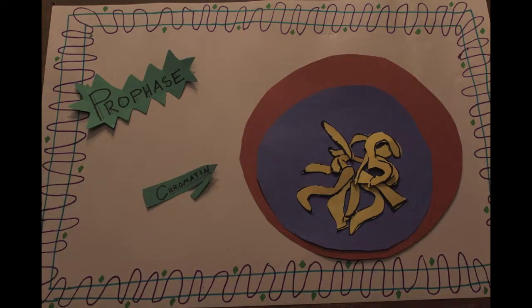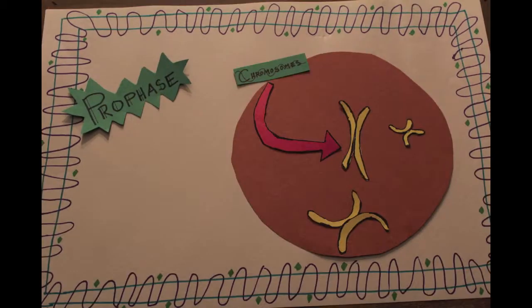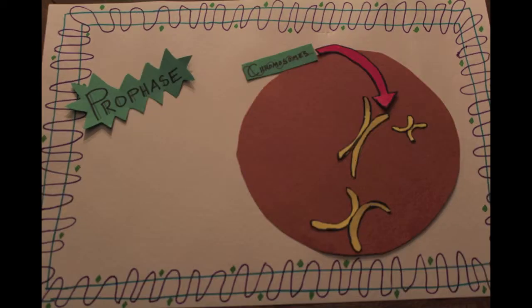During prophase, the chromatin condenses and the nuclear envelope breaks down. Then, the chromatin forms into the familiar X-shapes we call chromosomes.